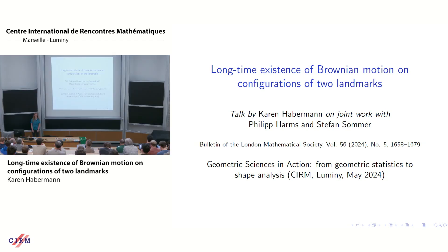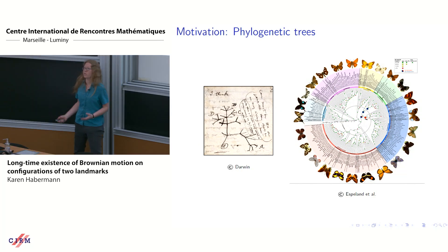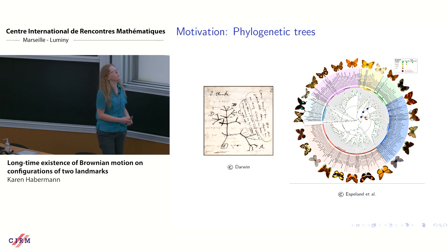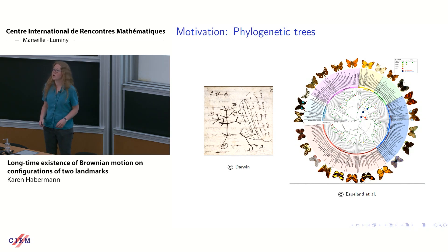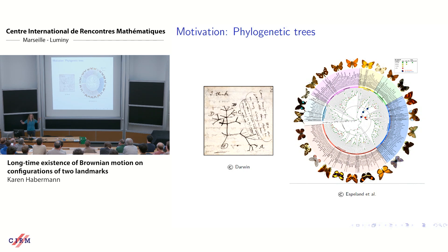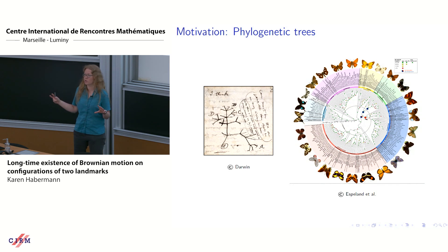Let me give a bit more motivation. For instance, if you have phylogenetic trees of butterfly wing shapes — a canonical example — you may have two butterfly wing shapes where one evolved into the other over time and you want to understand how this evolution happened. Because it's nature, it doesn't necessarily evolve according to geodesics, and you have some noise input, so you may want to model this as a stochastic evolution.